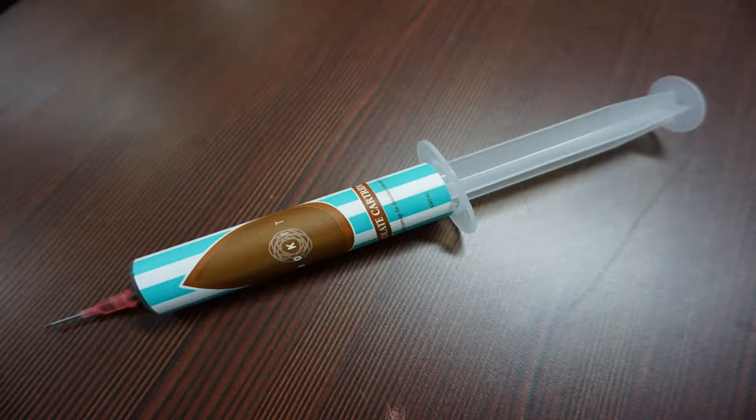It works with syringes filled with chocolate. Rokit provides three different types of chocolate: white, milk and dark chocolate. Although you can use your own materials, you are on your own in order to get the right parameters to print properly.